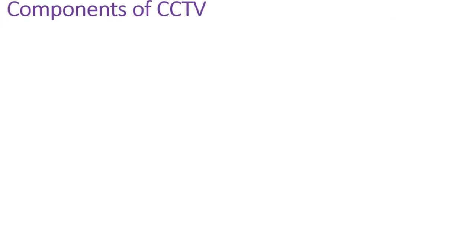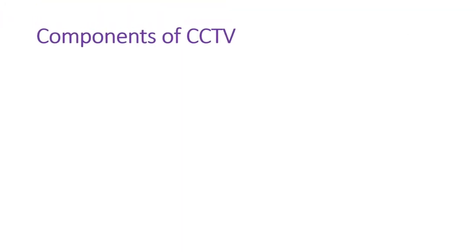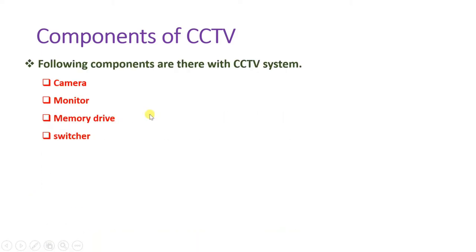The components of a CCTV system include: a camera, which is the major component; a monitor that the camera connects to; a switcher used to switch between different cameras; and a memory drive used to store the video data from the cameras. Let us see all these things in the block diagram for a clearer picture.